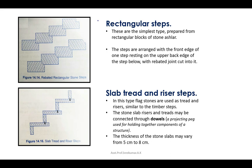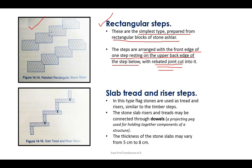The first type is rectangular steps — the simplest type, prepared from rectangular blocks of stone ashlar. The steps are arranged with the front edge of one step resting on the upper back edge of the step below, with a rebated joint cut into it.